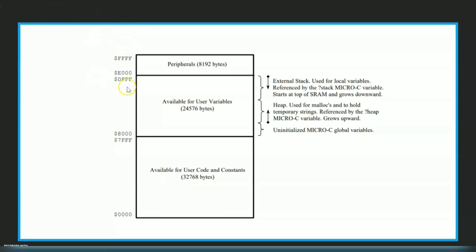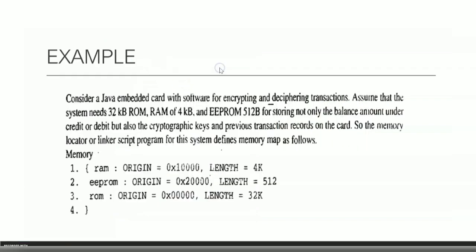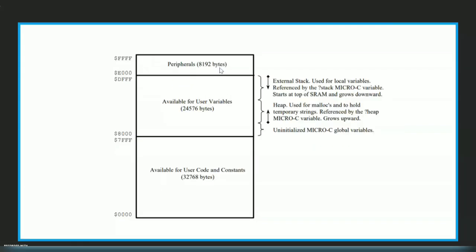Here is another memory mapping example. Again, the starting and ending address is given for every section, the data stored in each section is indicated, and the nature of the memory — whether heap, stack, or other — is also expressed. These are examples of memory mapping tables.